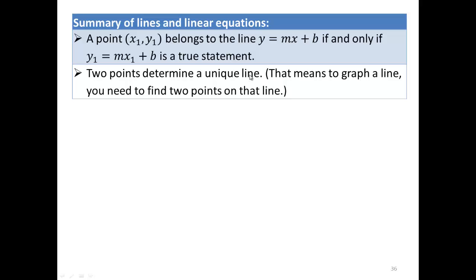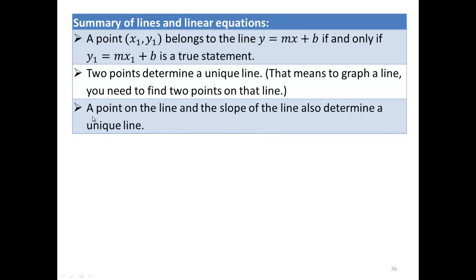Two points determine a unique line. That means if you are given two points, you should be able to find the equation of that line. Point on the line and slope of the line also determine a unique line.